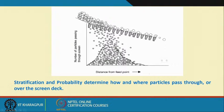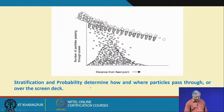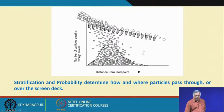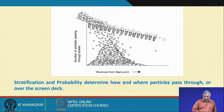Stratification and probability determine how and where particles pass through or over the screen deck. From the feed point, there is minimal separation initially, maximum separation through the middle zone, and very minimal separation at the end. For maintenance, you must examine the maximum separation portion closely for broken apertures and wear rate. This is a guideline for screen modification based on material flow and separation characteristics — a challenging area for mineral processing, mechanical engineers, and material scientists.